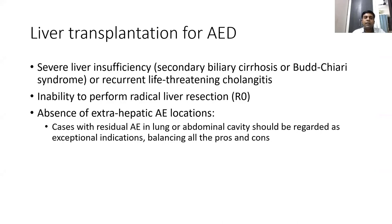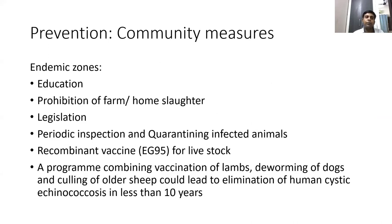Liver transplantation is considered when there is severe liver insufficiency — secondary biliary cirrhosis, Budd-Chiari syndrome, or recurrent cholangitis — and R0 resection with hepatectomy cannot be performed, provided extra-hepatic locations are absent. In exceptional situations with isolated lung involvement, transplant indications can be extended after weighing pros and cons.